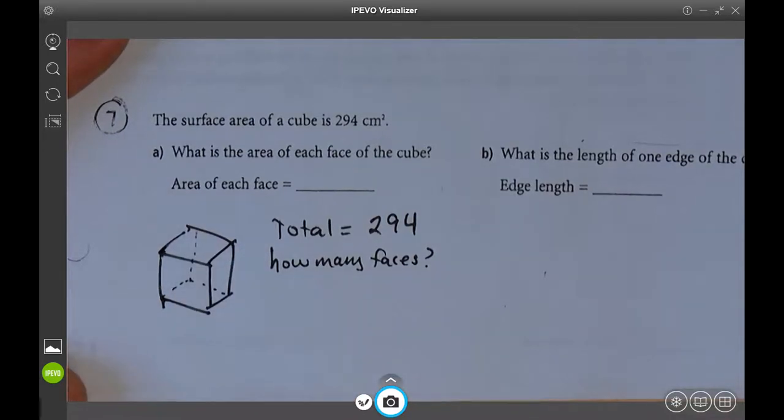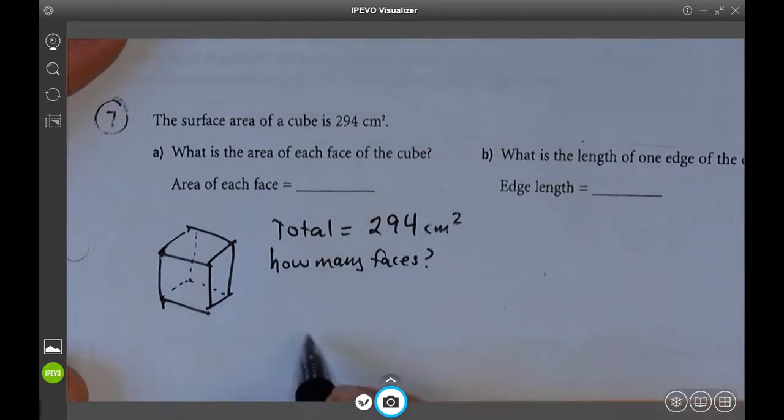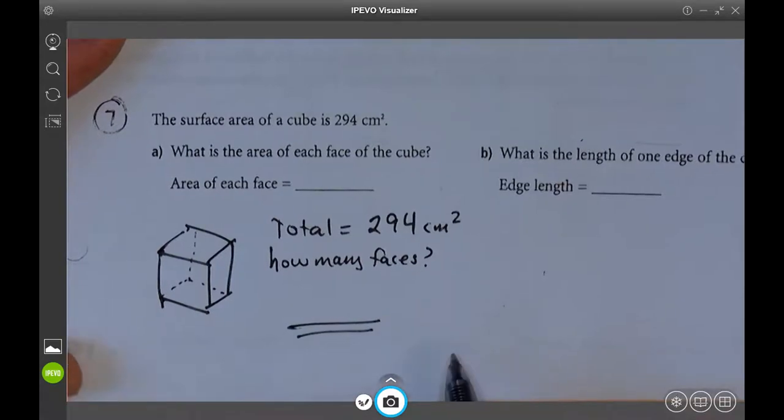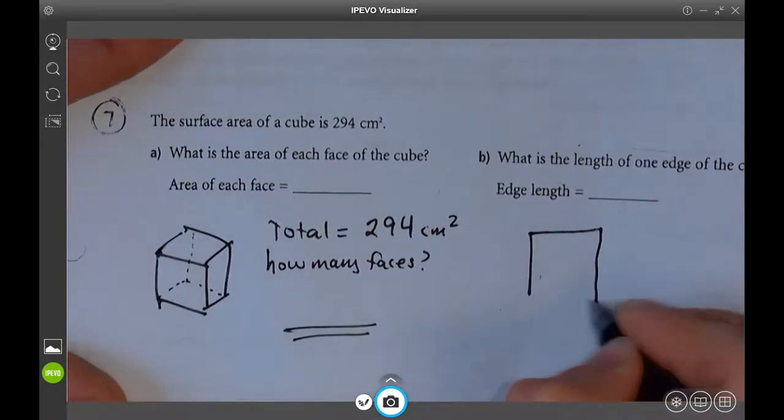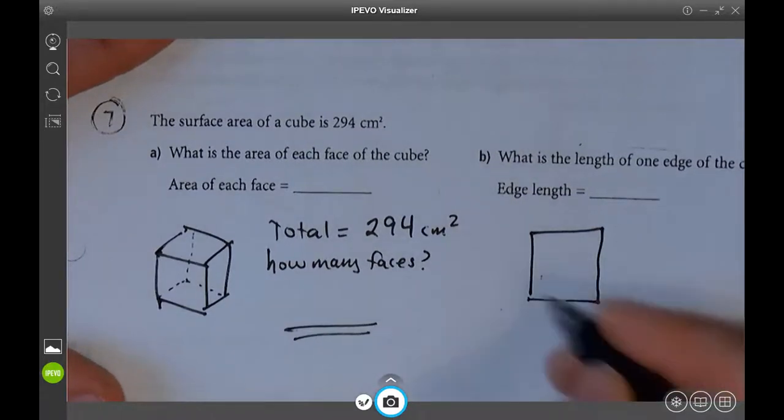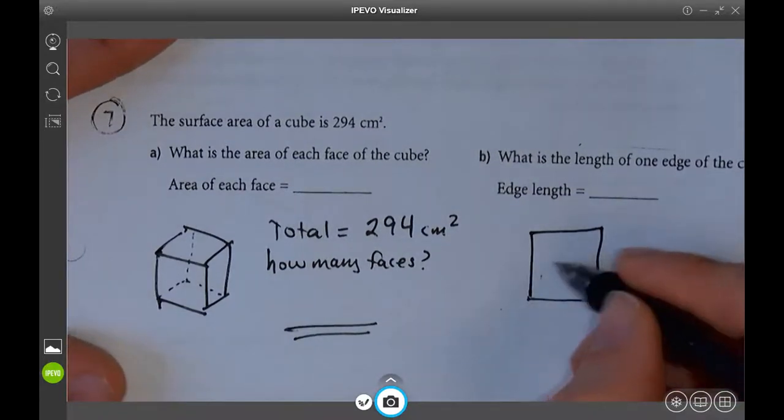And then what are you going to do? Divide the total number by how many faces it has, and you'll get the area of each face. Once you have the area of each face, you'll have the total area here. Right? You'll have the area.